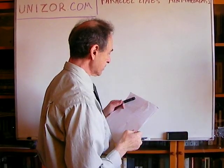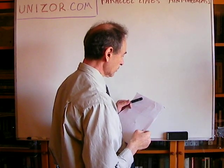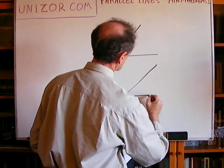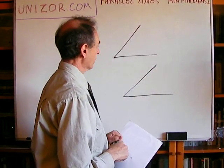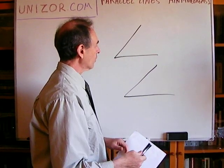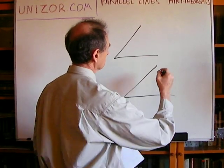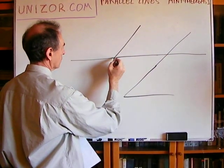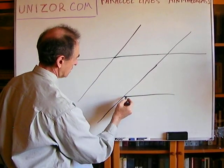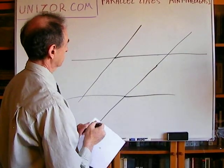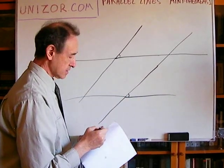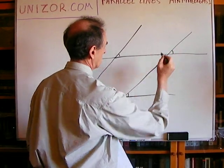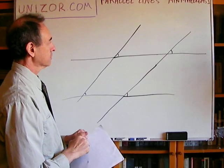Next: two angles with correspondingly parallel sides are either congruent or supplementary to each other. So you have one angle and another angle whose sides are parallel. This theorem states that these two angles are either congruent or supplemental. What I will do is continue in both directions all four rays which make these two angles. Now, it is obvious that these four angles must be congruent to each other.